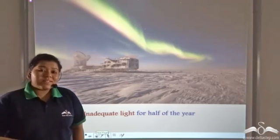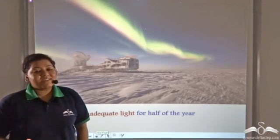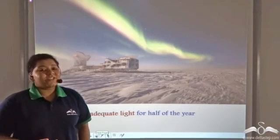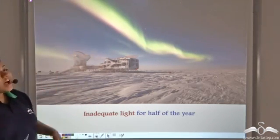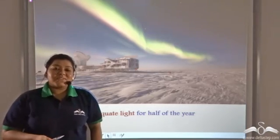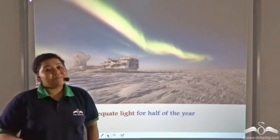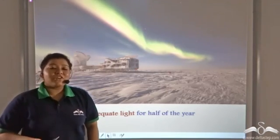For the same reason, poles have very scarce, almost negligible vegetation, because there is inadequate light for half of the year. And as we saw, light is very important for production of food.